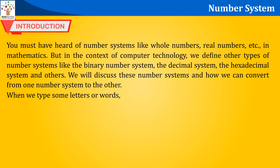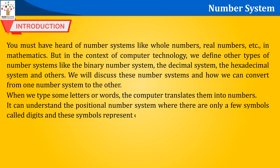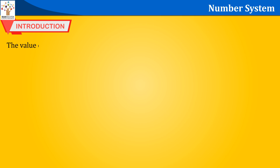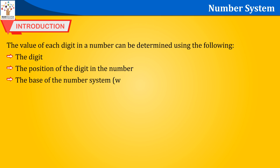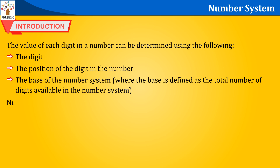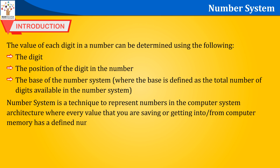When we type some letters or words, the computer translates them into numbers. It can understand the positional number system, where there are only a few symbols called digits and these symbols represent different values. The value of each digit in a number can be determined using the digit, the position of the digit in the number, and the base of the number system — where the base is defined as the total number of digits available in the number system.